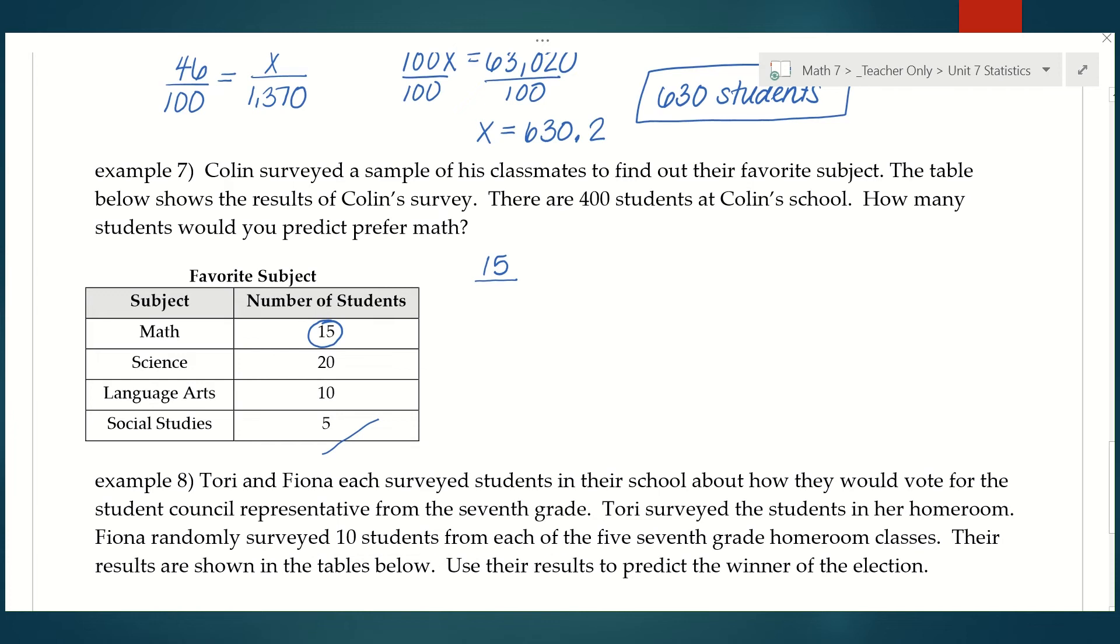So 15 plus 20 is 35, plus 10 is 45, plus 5 is 50. So 15 out of 50 students chose math, and I want to know how many out of 400 would also choose math. So 50 times x, 15 times 400 is 6,000. Divide by 50 gives me 120 students.